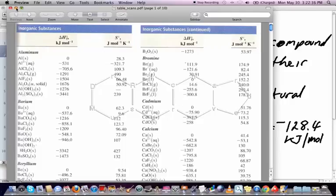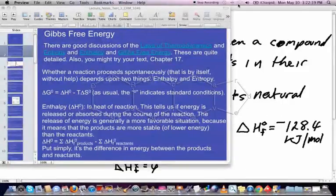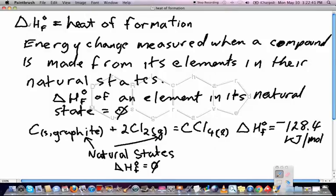Let's look at a definition for heat of formation. Delta HF0 is heat of formation, and it's the energy change measured when a compound is made from its elements in their natural states.